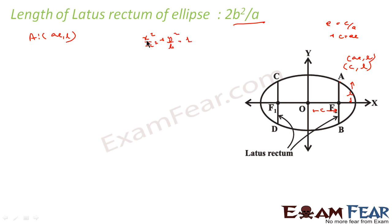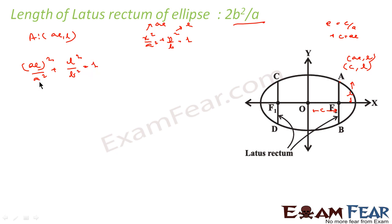Since point A lies on the ellipse equation X² / A² + Y² / B² = 1, we can substitute X = AE and Y = L. This gives A² / A² + L² / B² = 1, so L² = (1 − E²) × B².